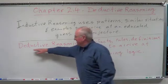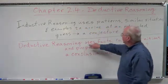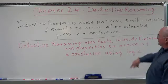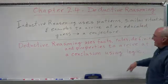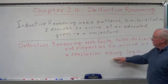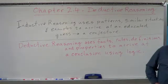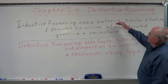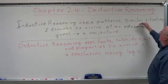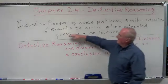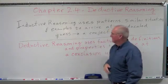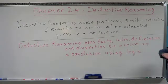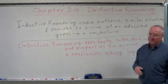Specific examples and coming up with a general concept of an idea. On the other hand, opposite to that is deductive reasoning. Deductive reasoning uses facts, rules, definitions, and properties to arrive at a conclusion using logic. What's the difference? Patterns, similar situations, and examples versus facts, rules, definitions, and properties of things.